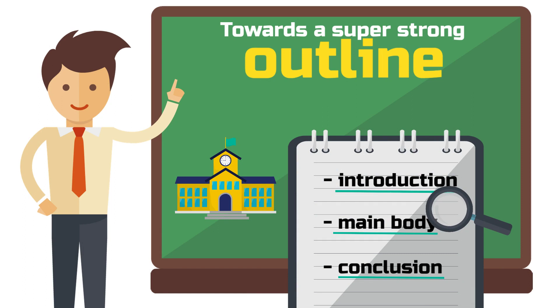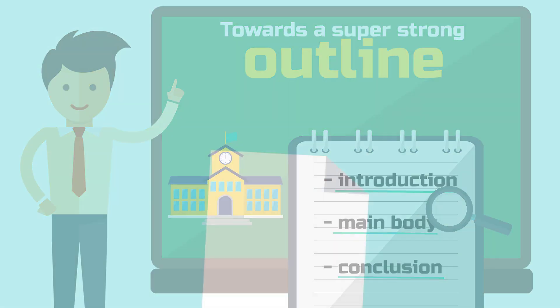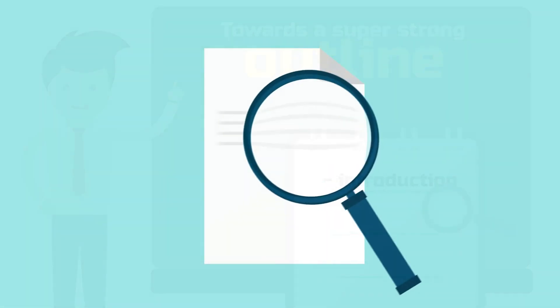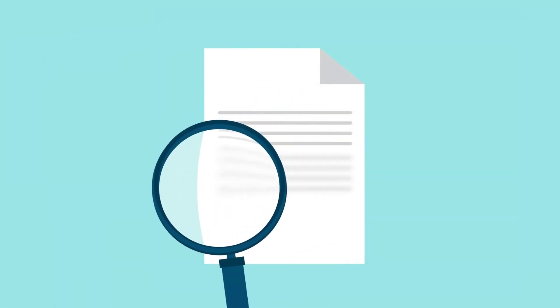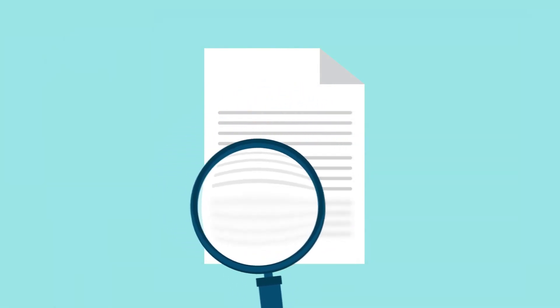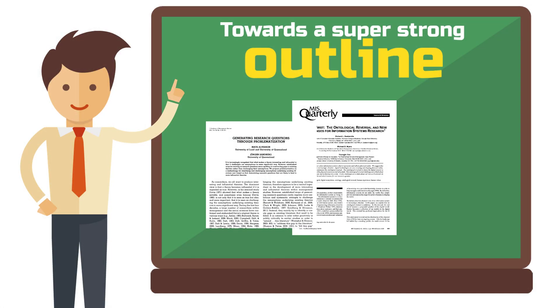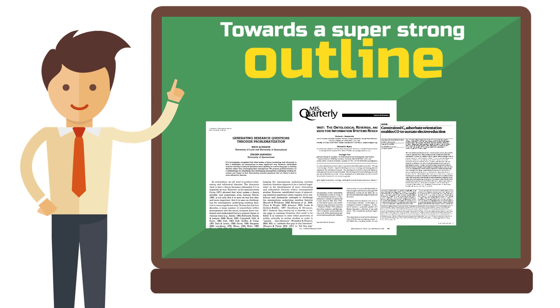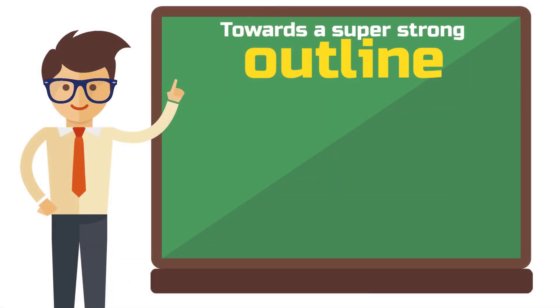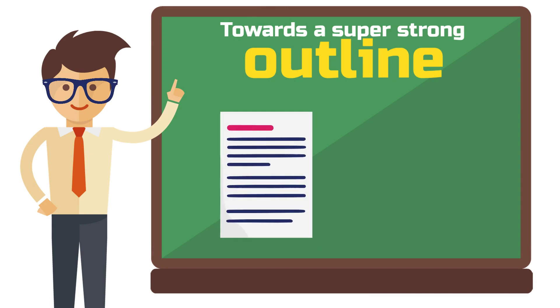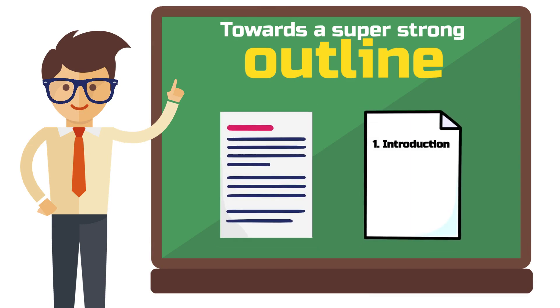My first piece of advice would be: if you have never read a proper research article — which is about 15 pages or so, and which you can find millions of in scientific databases — you should do so now. In research, publications must always follow the same principle. It is optimally designed to sell your own research results to an unknown reader. So take a look at a classic paper and pay attention to the headings into which the document is divided.